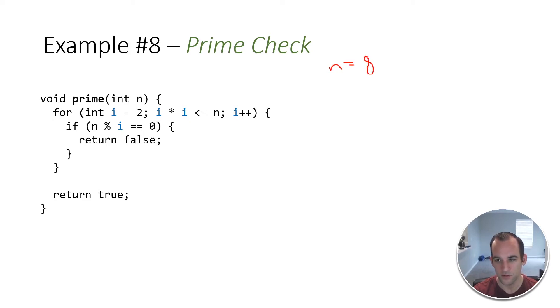So for i equals 2, i times i is less than or equal to n. So i times i, 2 times 2 is 4. That's less than or equal to 8, so we can go inside the for loop. If n mod i equals 0, what does mod mean? That just means we're checking to make sure if there's a remainder. So n is 8, i is 2. 8 mod 2 does equal 0.